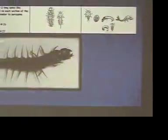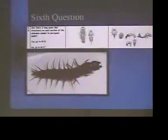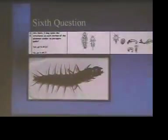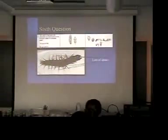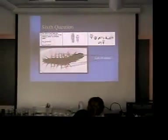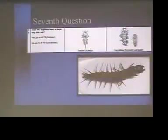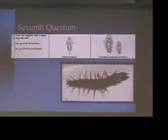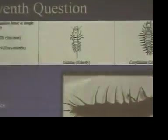Question twenty-five: are there two long spine-like structures on each section of the body on the abdomen? Yes — he's got a whole bunch of them. Go to twenty-six: does this organism have a long thin tail? No, it doesn't look like it — he's got two hooks on the end of his abdomen. So we go to seventy-nine.